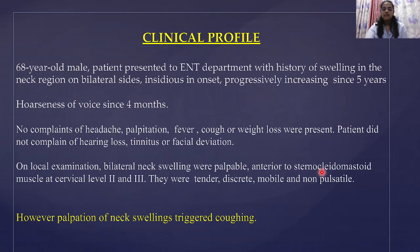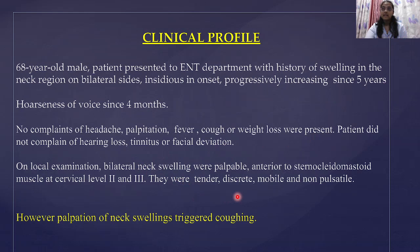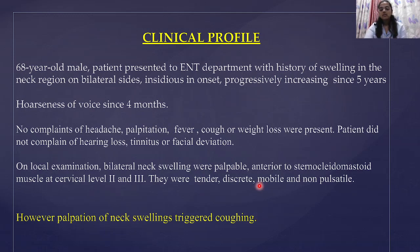He did not have any hearing-related complaints, tinnitus, or facial deviation. On examination they found masses in the neck which were bilateral and most of them were anterior to the sternocleidomastoids at cervical levels 2 and 3. These masses were non-pulsatile, tender, discreet, and mobile. An important finding was that on palpation the neck swellings triggered a cough reflex in the patient.